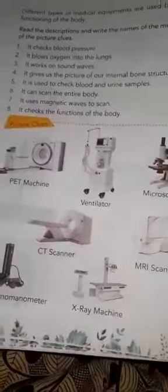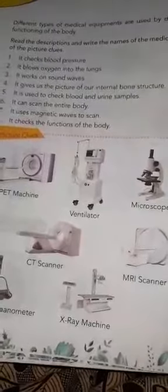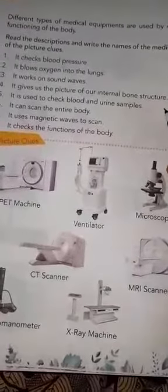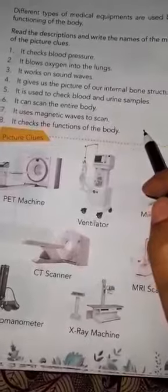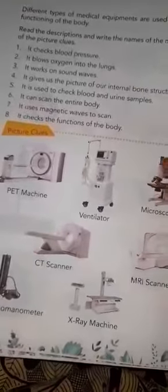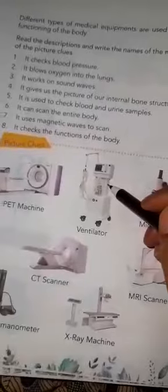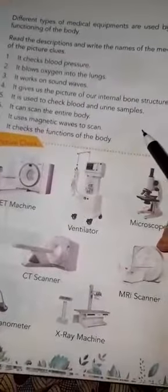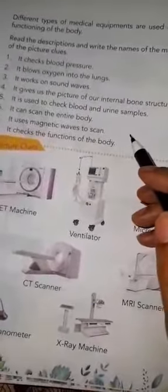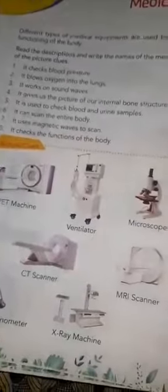The next clue: it can scan the entire body. Many scanners are given, so you need to identify which scanner gives a scan of the entire body. Another clue: it uses magnetic waves to scan the body. Identify which machine uses magnetic waves to scan.